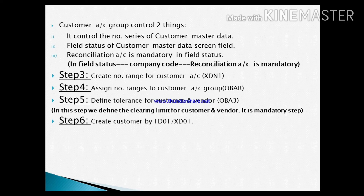The next step is to define tolerance for customers and vendors under T-code OBA3. In this step we define the clearing limit for customers and vendors. This is a mandatory step, but since we already configured it in accounts payable, it is a one-time configuration and does not need to be created again.